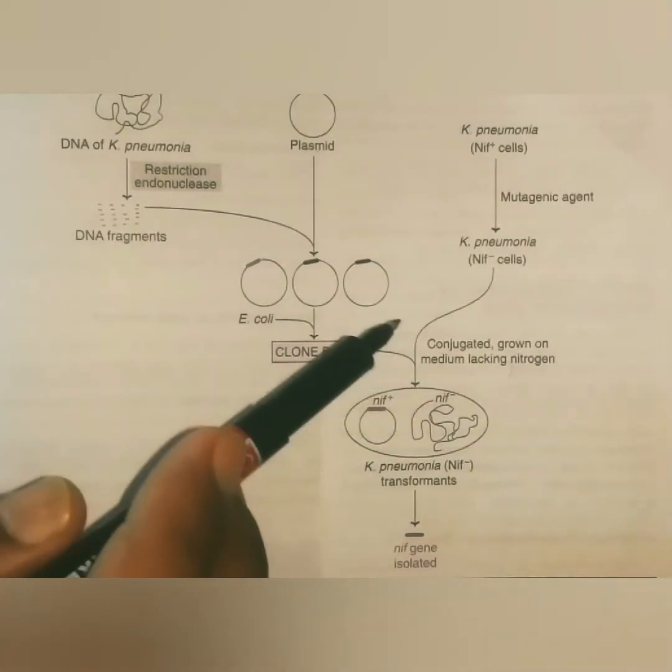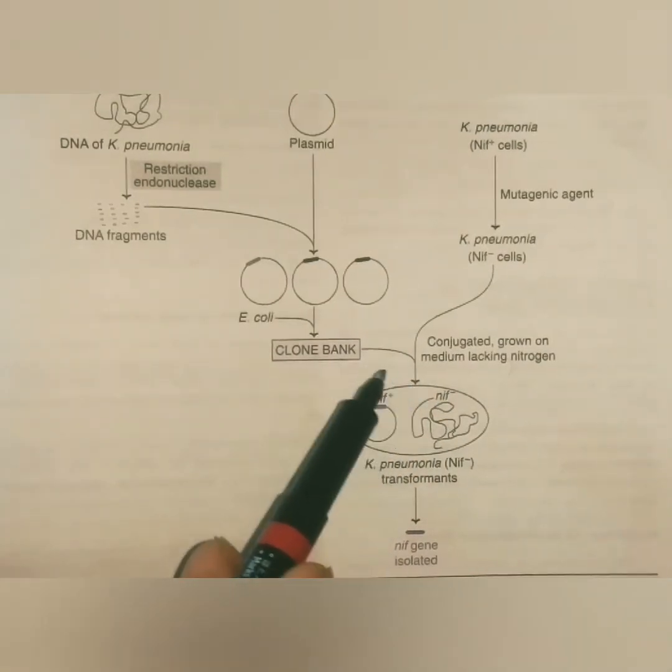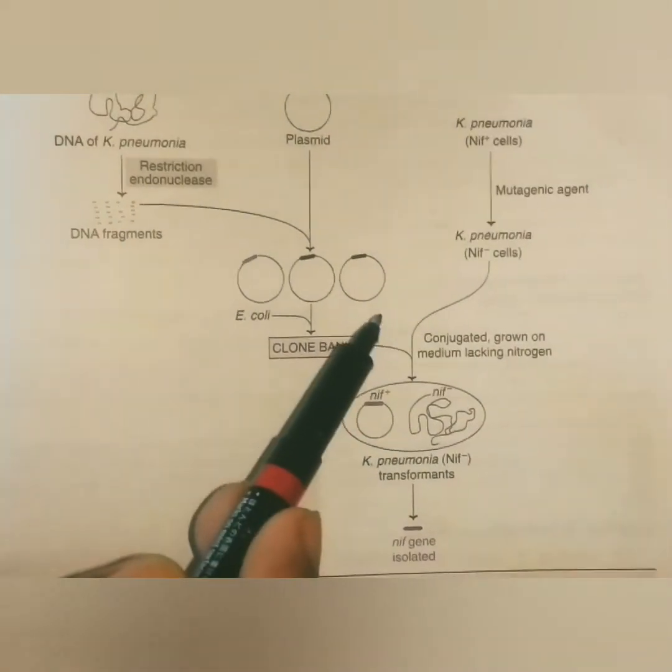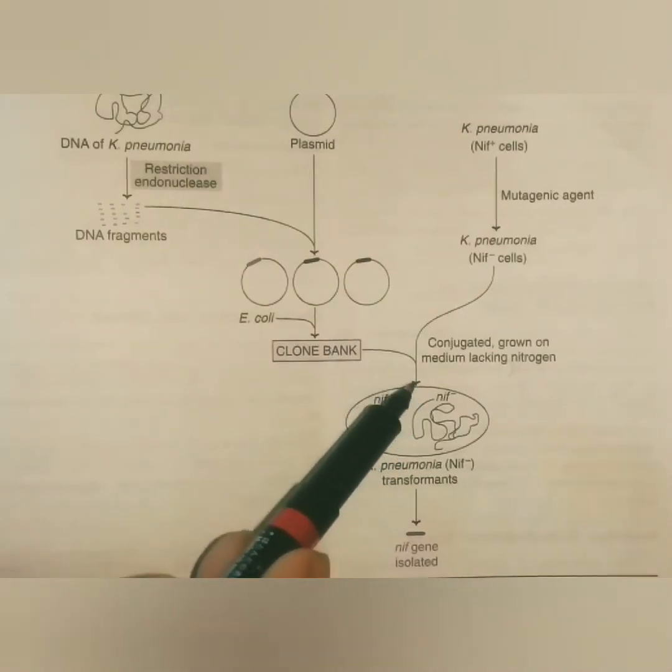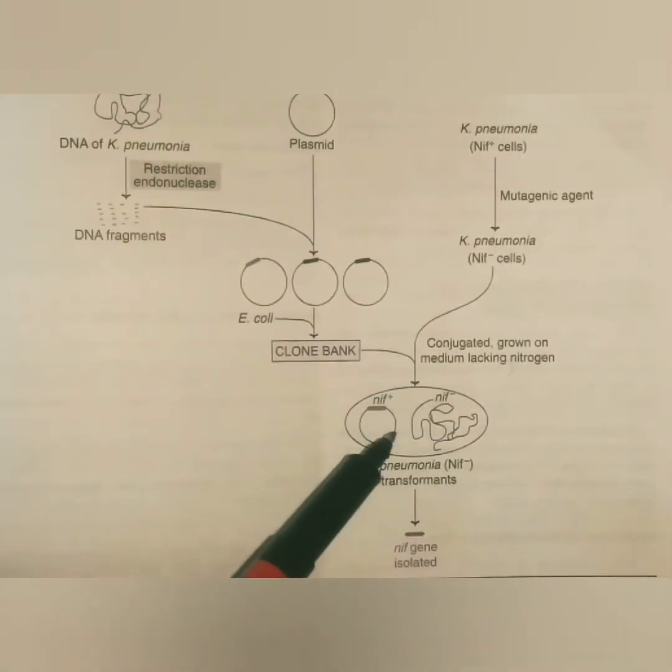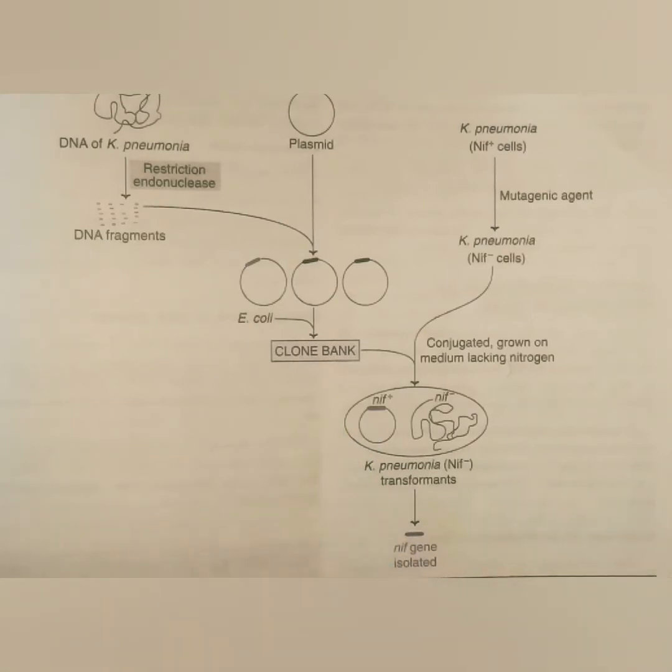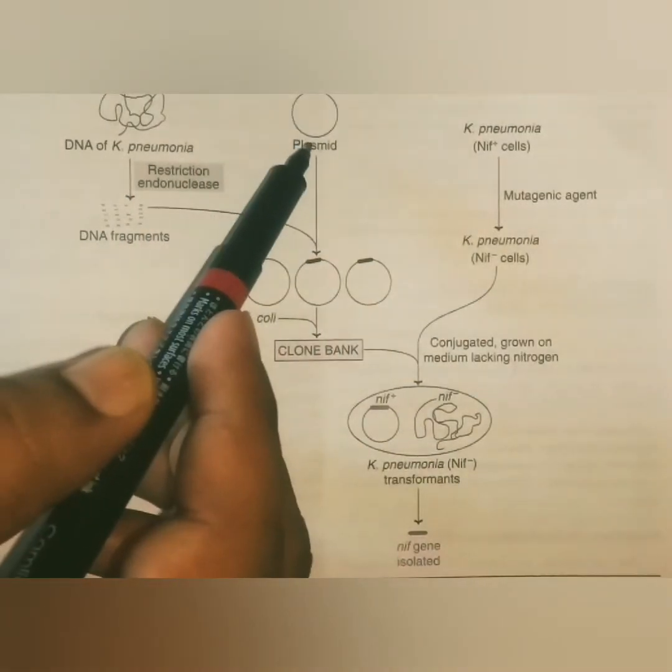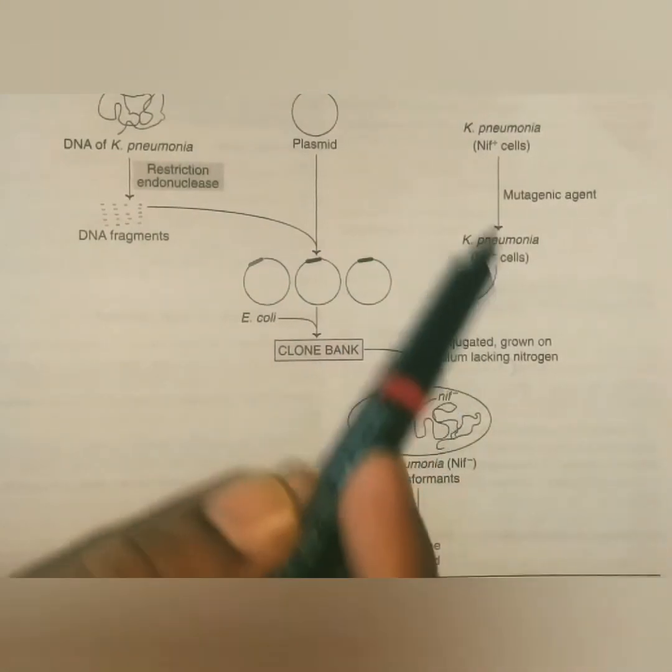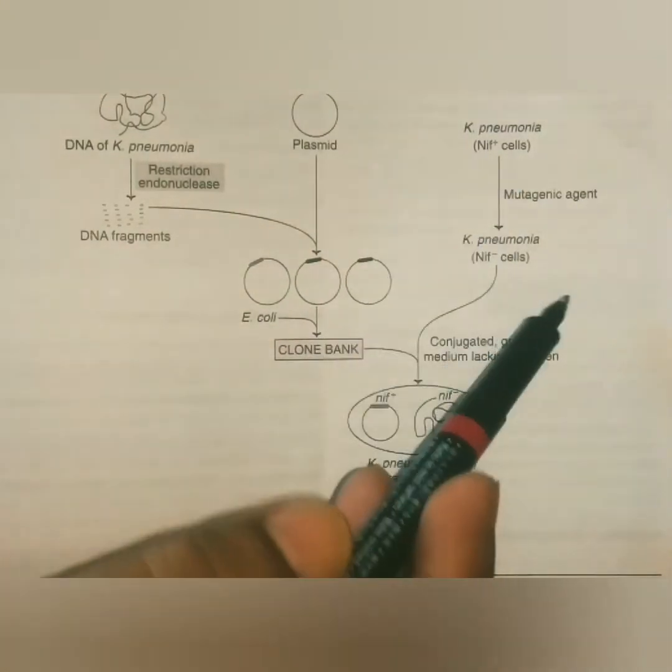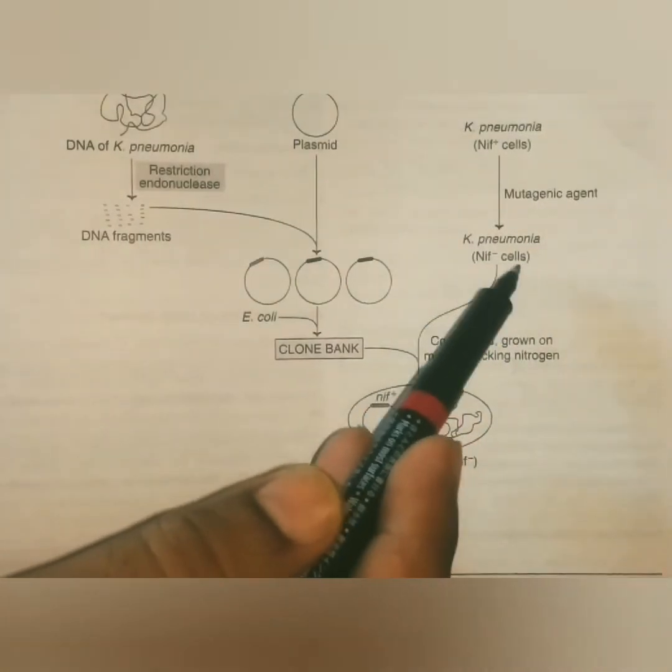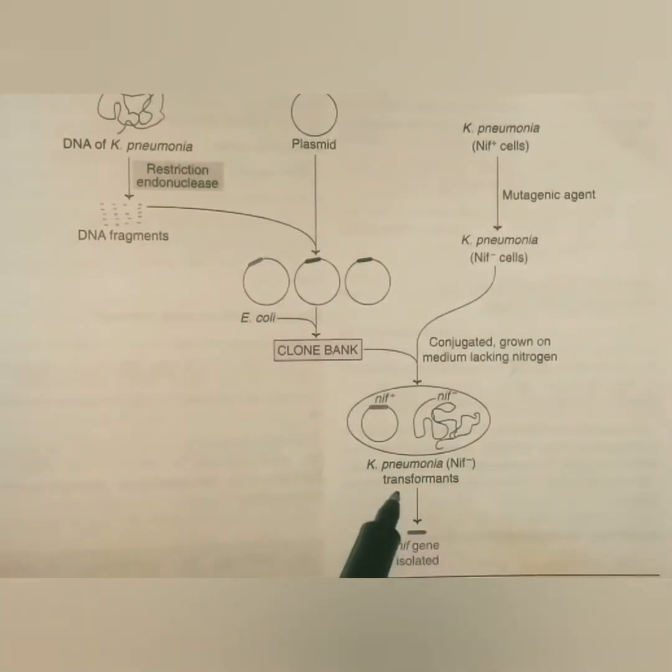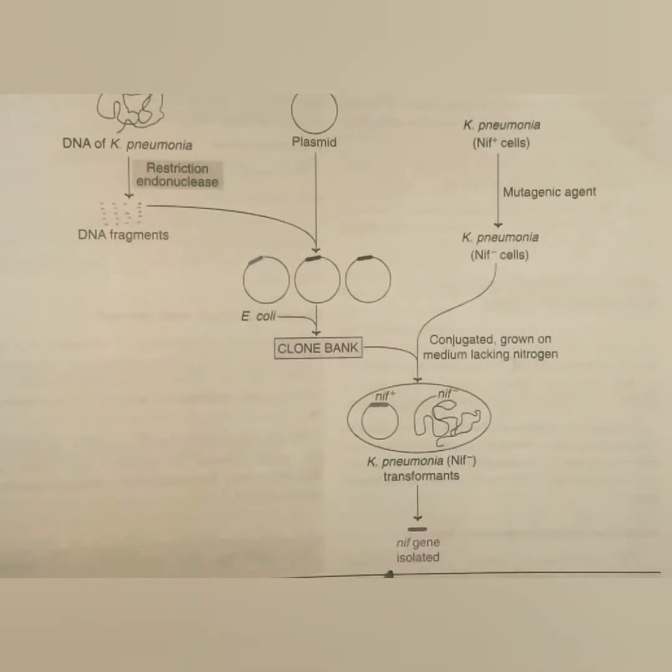The DNA fragments in the plasmid that contains NIF genes which complement NIF-minus mutations in Klebsiella pneumoniae can be isolated. So, the DNA of Klebsiella pneumoniae restriction endonuclease cut, DNA fragments come. This is plasmid, vector, E. coli, clone banks. Then Klebsiella pneumoniae NIF-plus cells, mutagenic agents, Klebsiella pneumoniae NIF-minus cells. Then conjugate and grown on medium lacking nitrogens, NIF-plus and NIF-minus. Klebsiella pneumoniae transformants and NIF genes isolate.